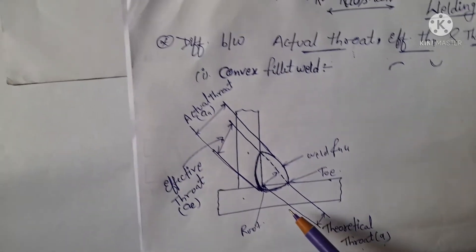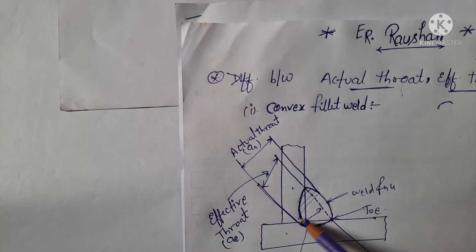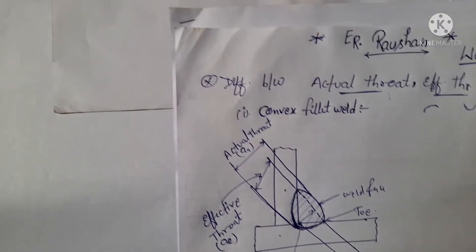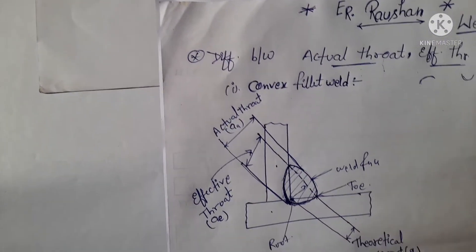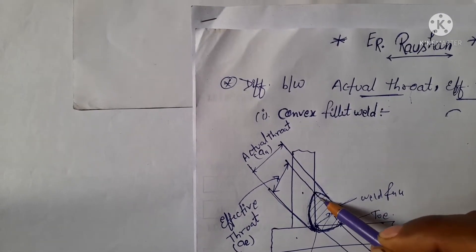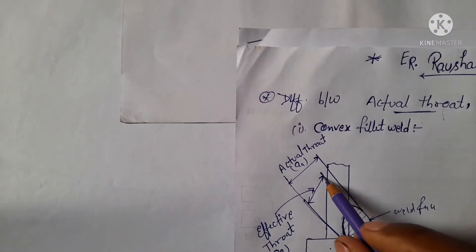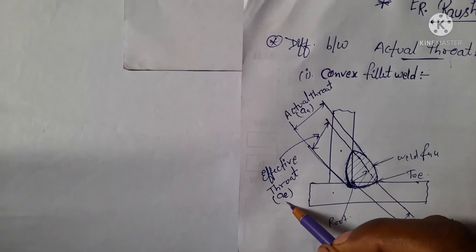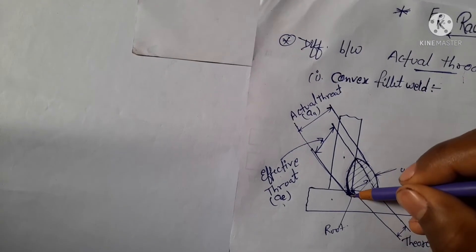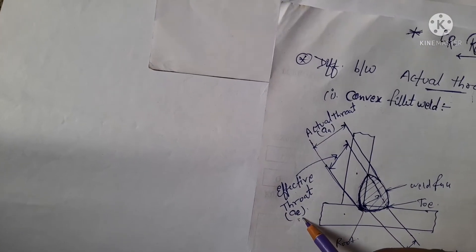In actual welding, this is the total weld face. The theoretical throat is denoted by A. From the imaginary line to the root penetration, this distance is known as the effective throat, denoted by AE.